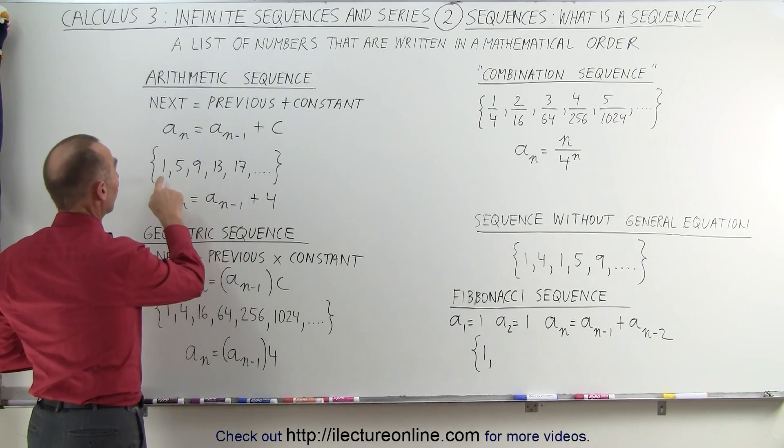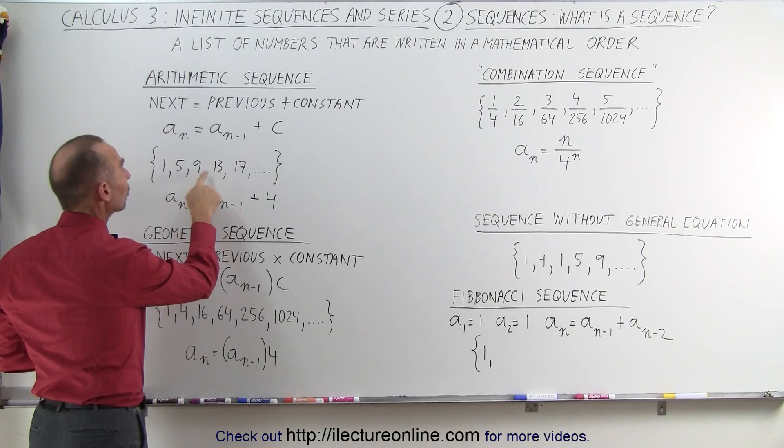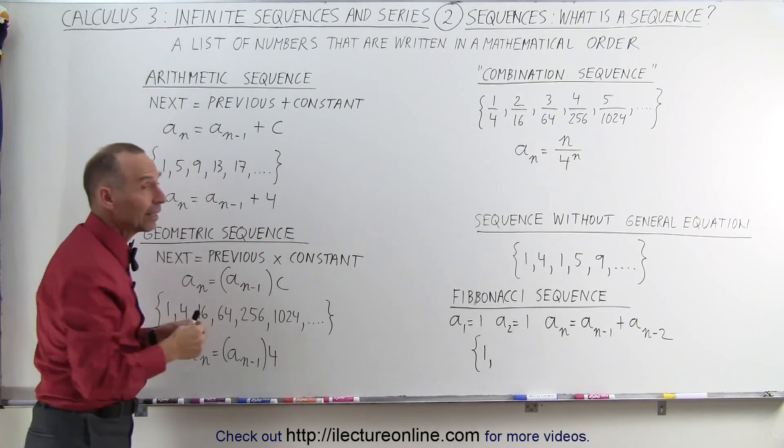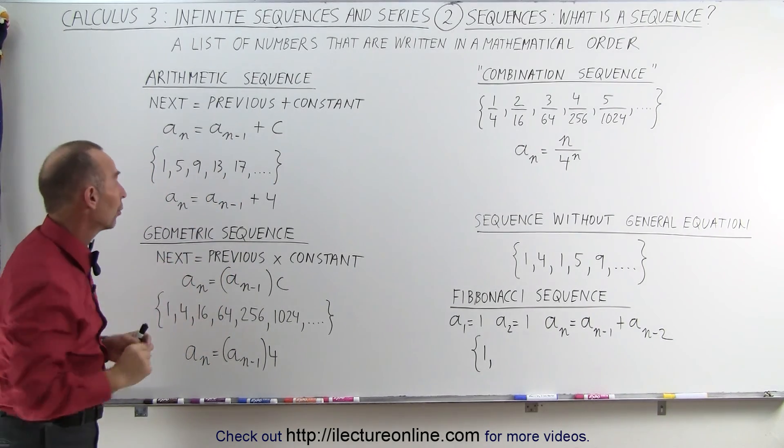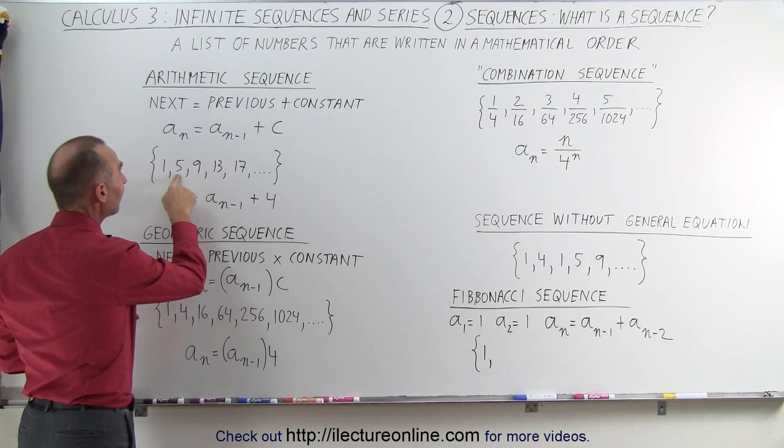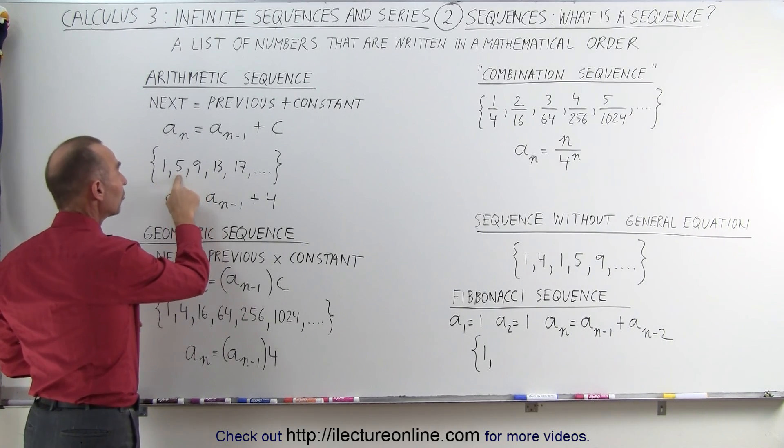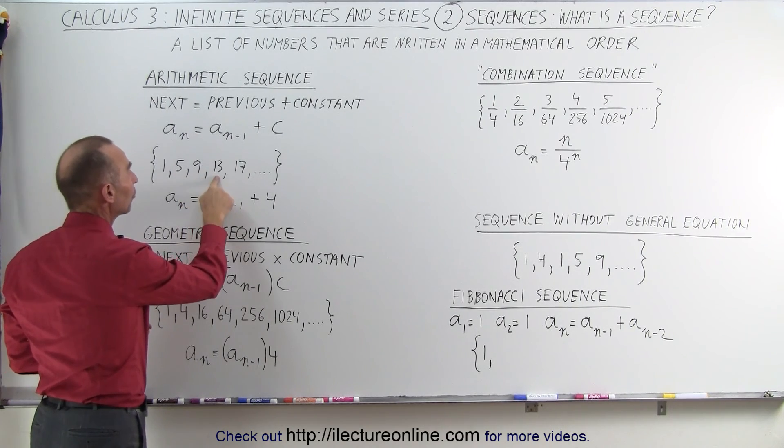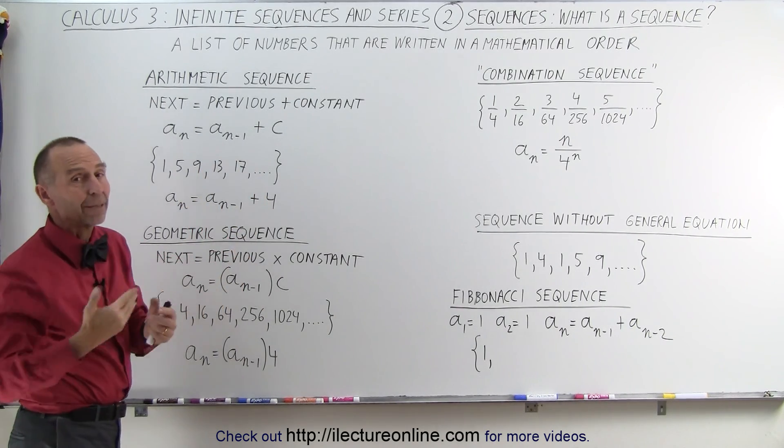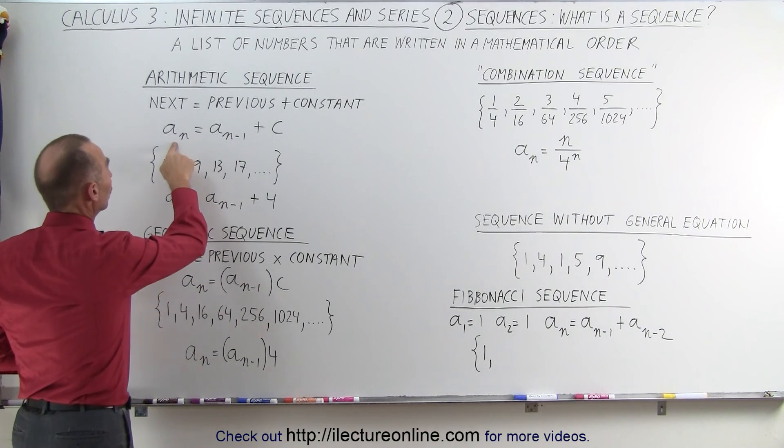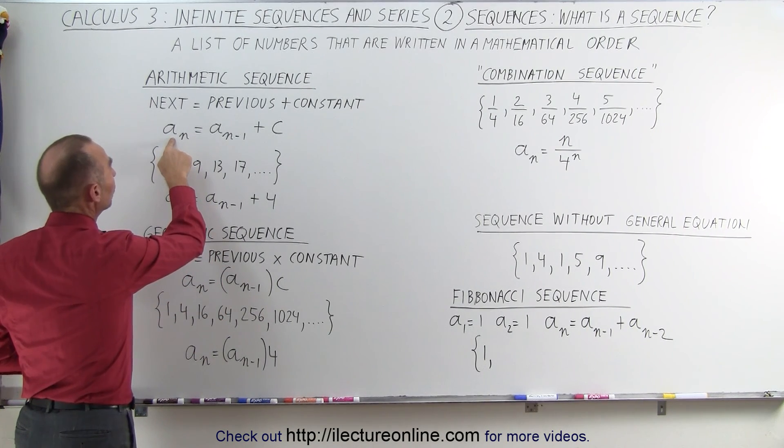When you look at this example here, 1, 5, 9, 13, you begin to see that they all differ by the number 4, which means that the next number, 5, is the previous number plus 4. 9 is the previous number plus 4, 13 is the previous number plus 4. So this can be mathematically written as the current number in the sequence.